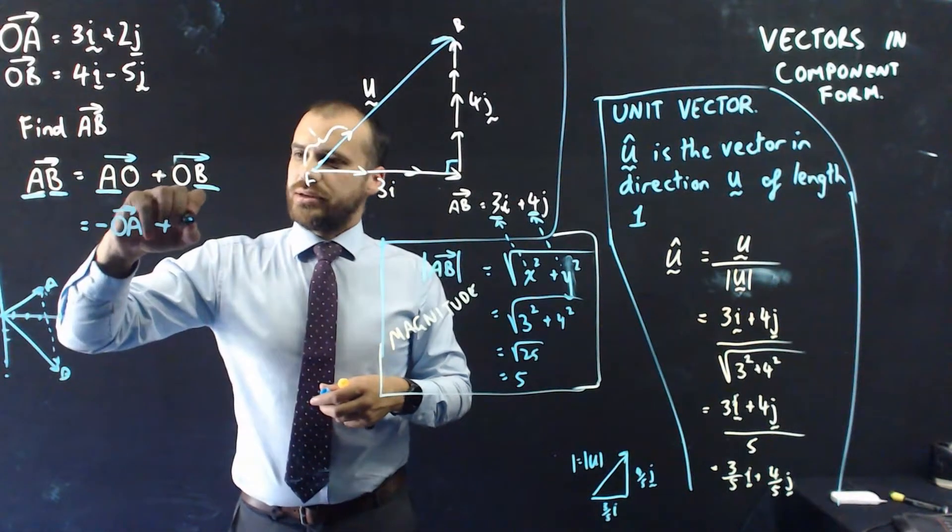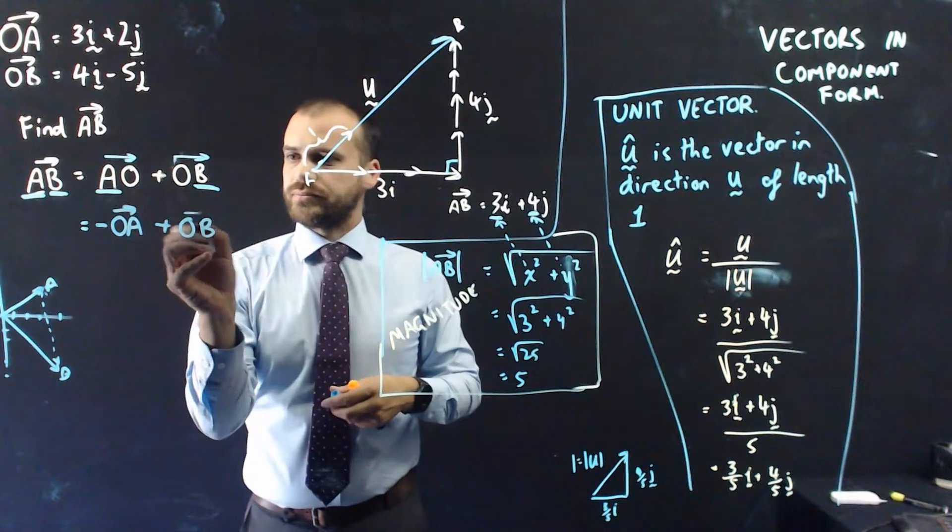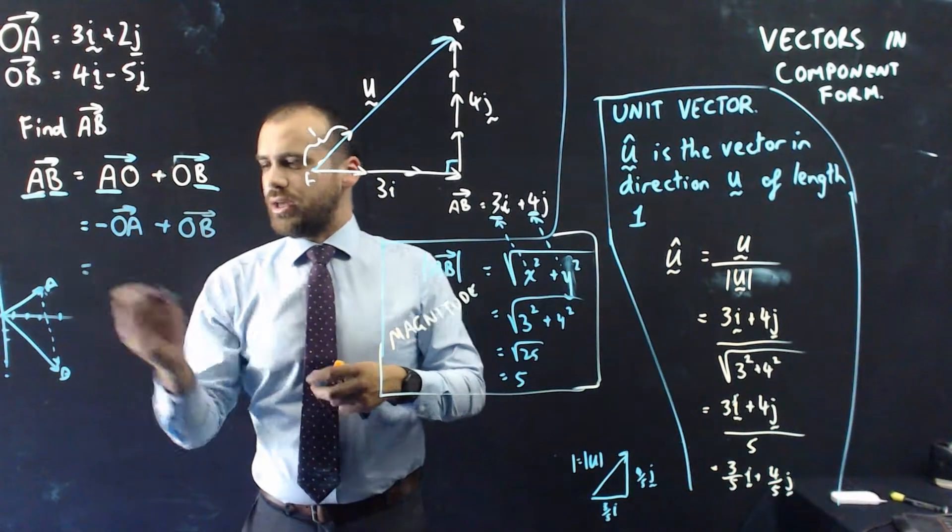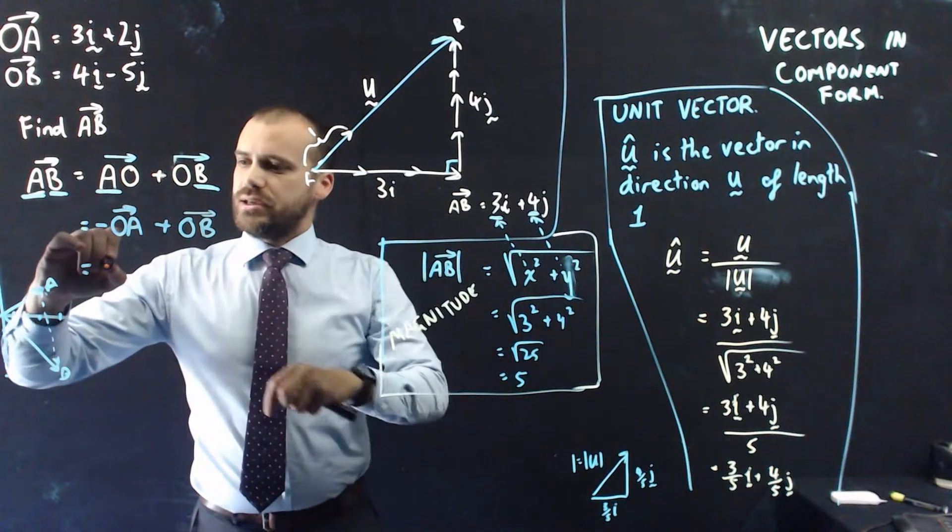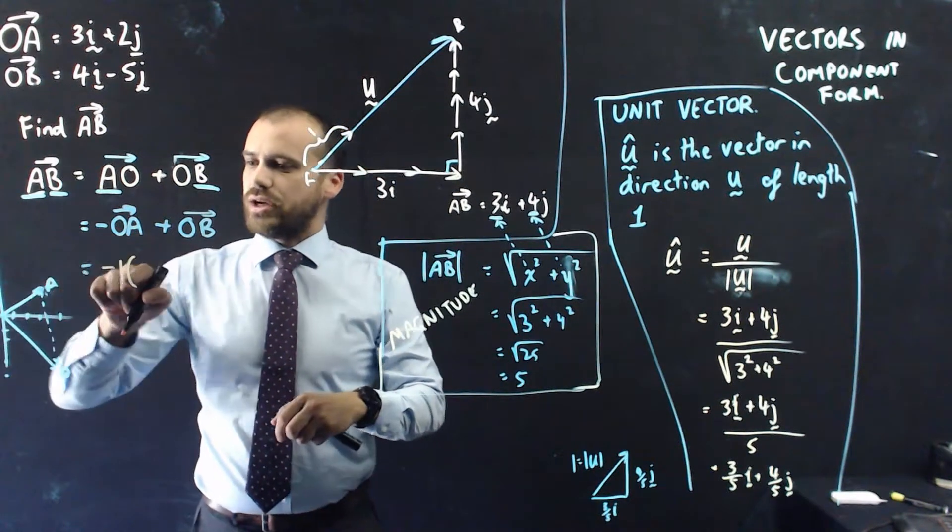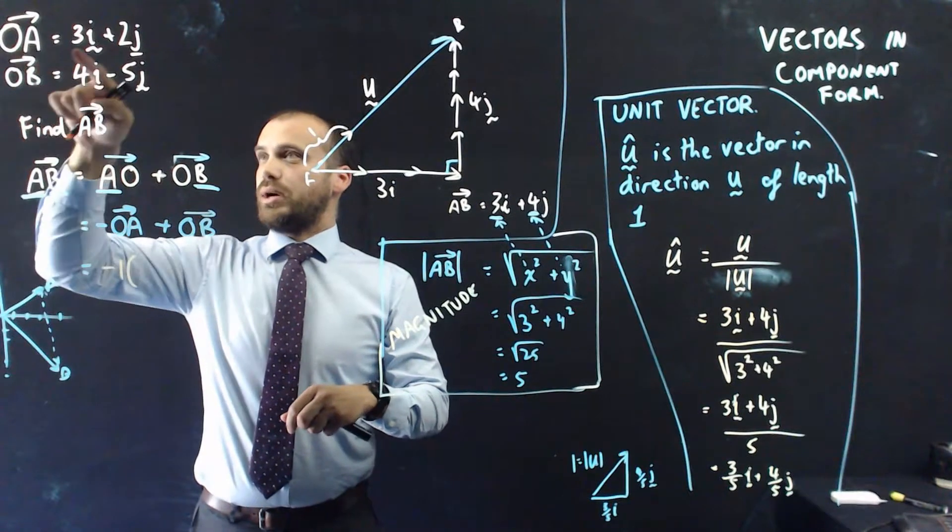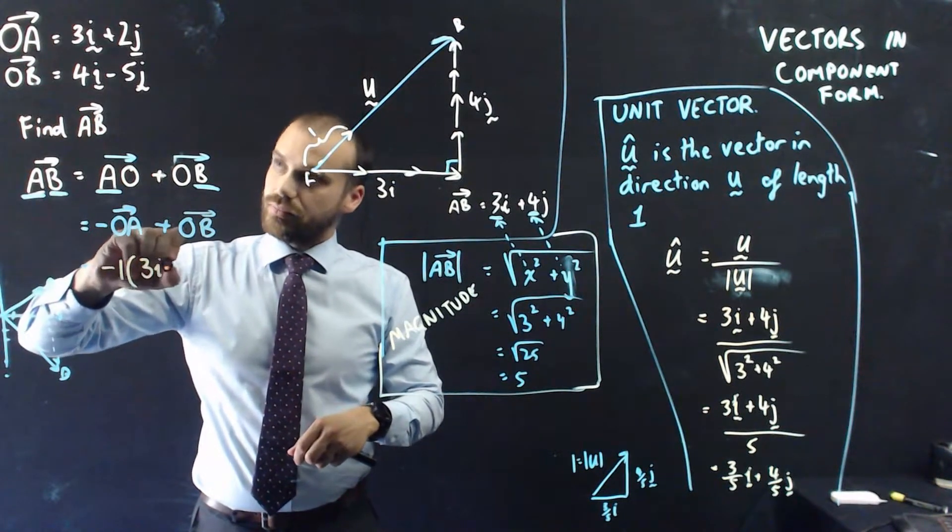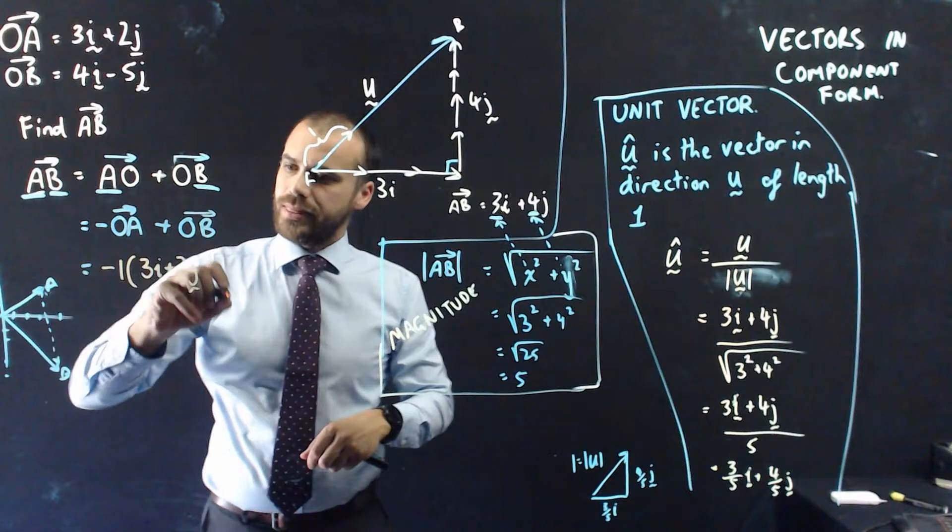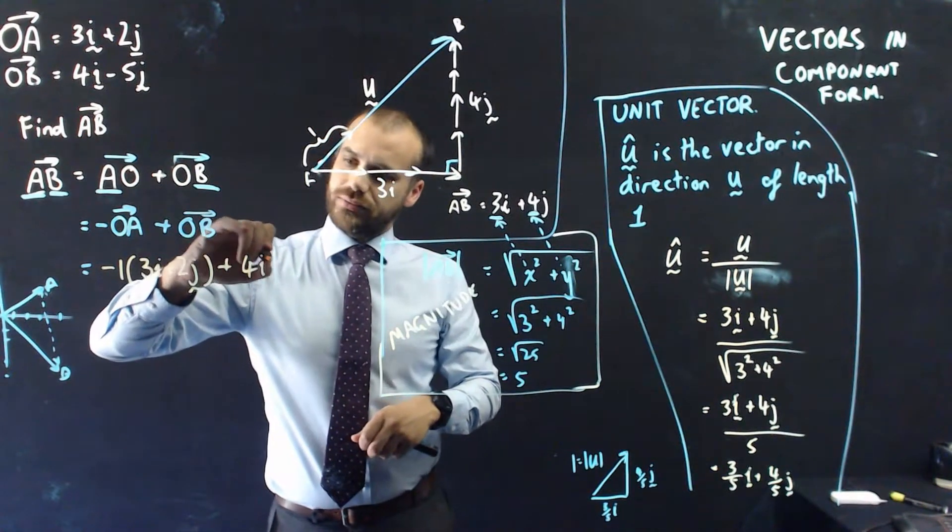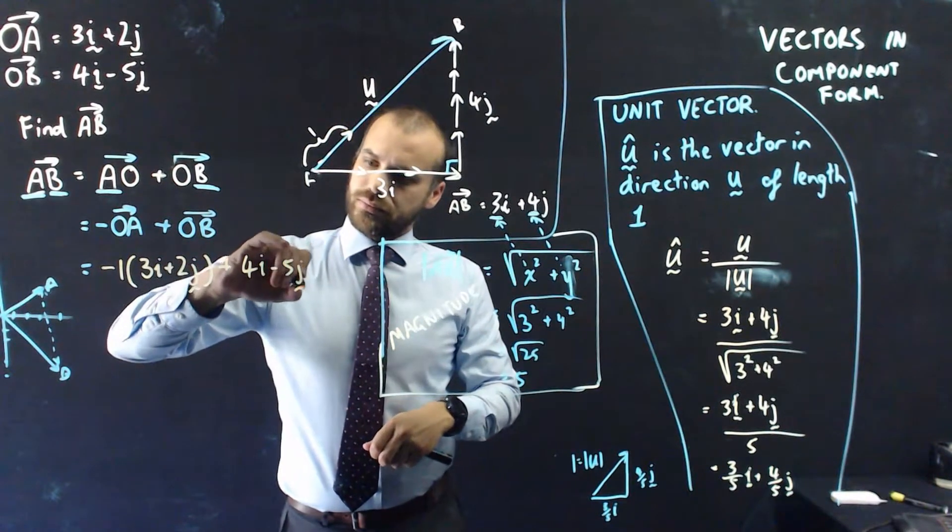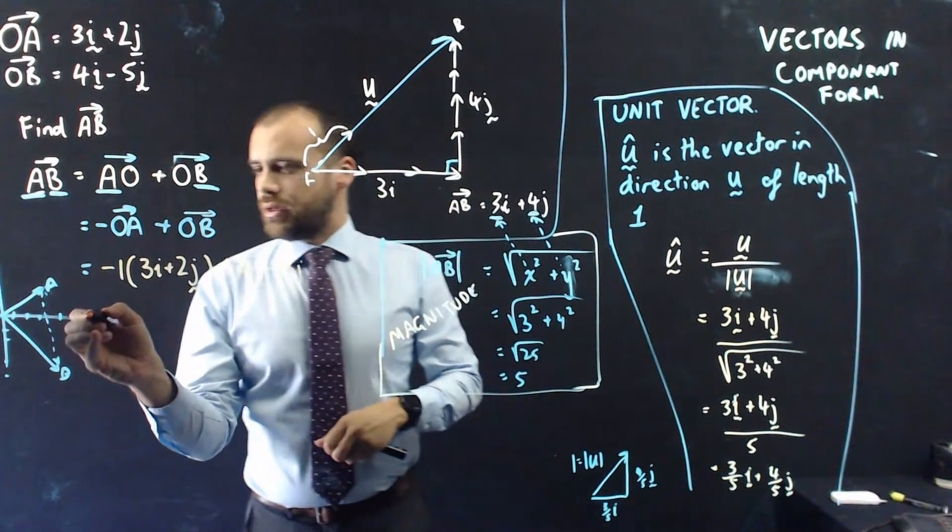So, AO is equal to negative OA. OB, well, I already know OB, so I'm fine with that. All right, now I can do a little bit of working here. So, negative OA is equal to negative 1 times OA plus 2J plus OB, which is 4I minus 5J.